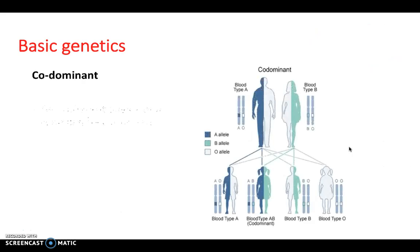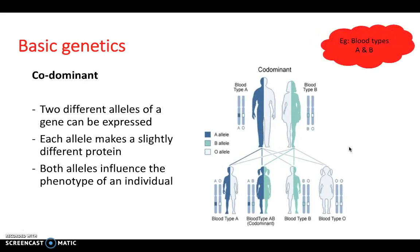We also have codominance. And here the classic example of this is blood types A and B. And each allele makes a slightly different protein, but both alleles influence the phenotype of an individual.